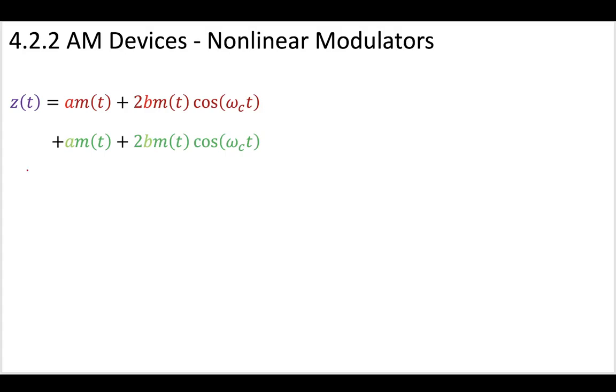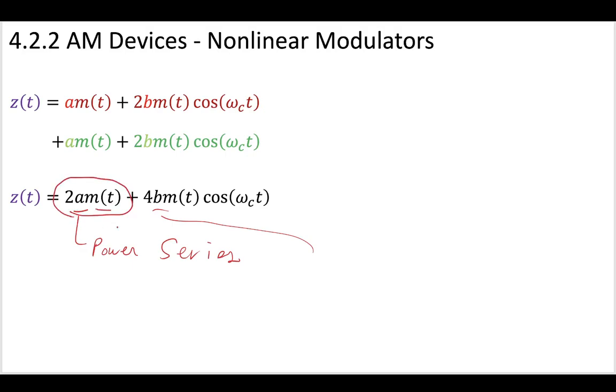Furthermore, we can see that these terms are actually quite similar. So our overall z(t) is 2am(t) plus 4bm(t) cosine(omega_c t). And this a is a coefficient from our power series, and our b is also a coefficient from our power series. By modeling the nonlinear devices as power series, two-term power series approximations, substituting those back in and making this subtraction, we have determined that our z(t) term has one term, this first term, which appears to contain the message being multiplied by some constants, and then a second term, which contains the message being multiplied by a cosine wave with our carrier frequency. So this is good. In the next video, we're going to see why this is good and how this will ultimately work to give us a nonlinear modulator.